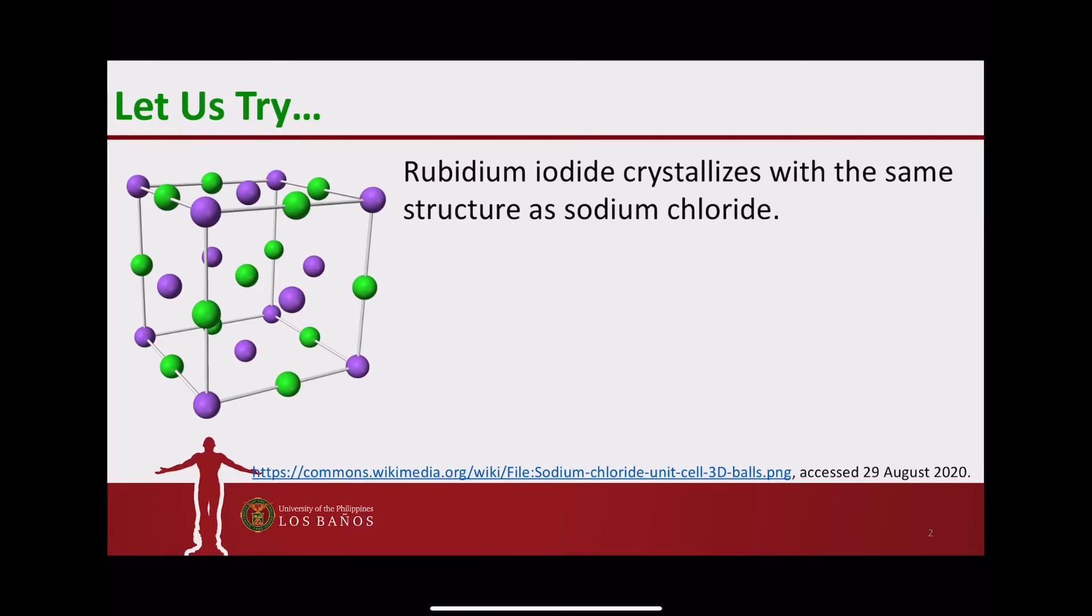Rubidium iodide crystallizes with the same structure as sodium chloride. As such, we can infer that iodide assumes the face-centered cubic lattice and rubidium would be in the body of the unit cell as well as in all the edges.